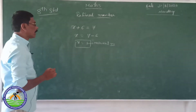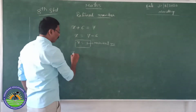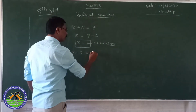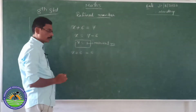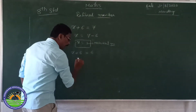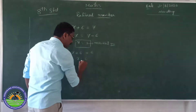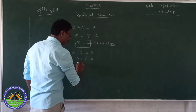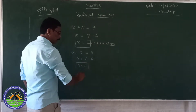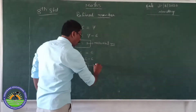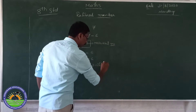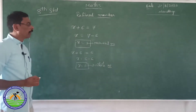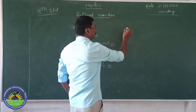Take another example: x plus 6 is equal to 6. So x is equal to 6 minus 6. We get x is equal to 0. This is a whole number.